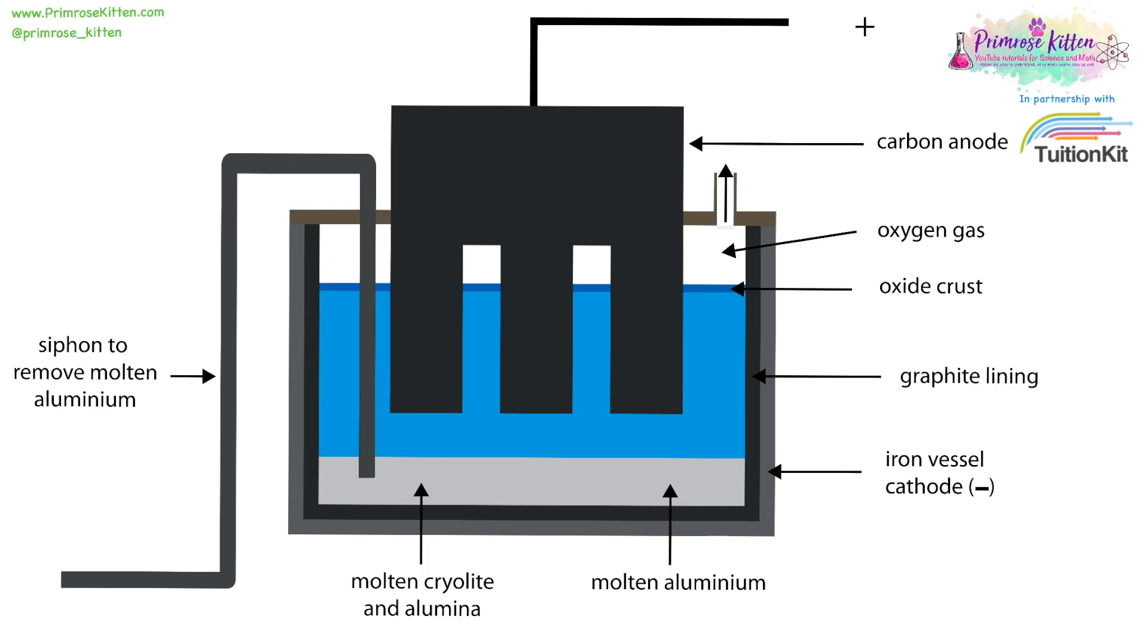The aluminum ions are going to be attracted to the negative electrode, so they are going to form as molten liquid aluminum metal at the bottom. This can then be removed from the system.